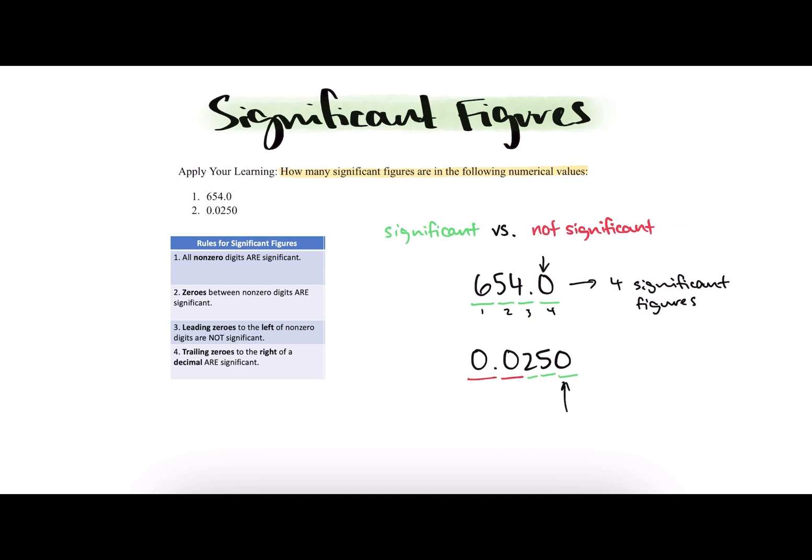So when we count all of those up, we see that there are one, two, three significant figures. And so those are our answers for part number one and part number two.